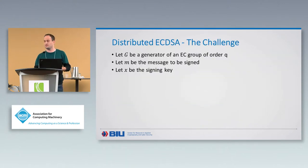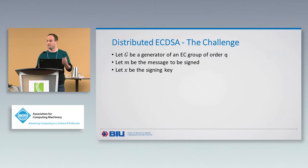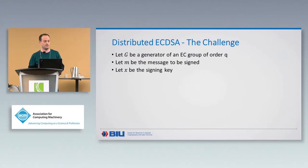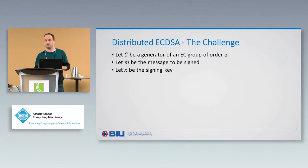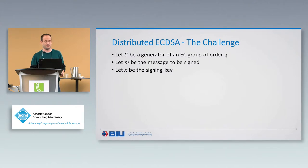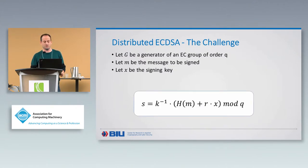What is so challenging about distributed ECDSA? Threshold cryptography is something people have been studying for many years with a lot of progress, but somehow ECDSA was kind of left behind. To understand why, let's look closer at the signing algorithm. We have an elliptic curve group with a generator G. M is the message we want to sign, X is the signing key, and here is the formula for computing a signature S.